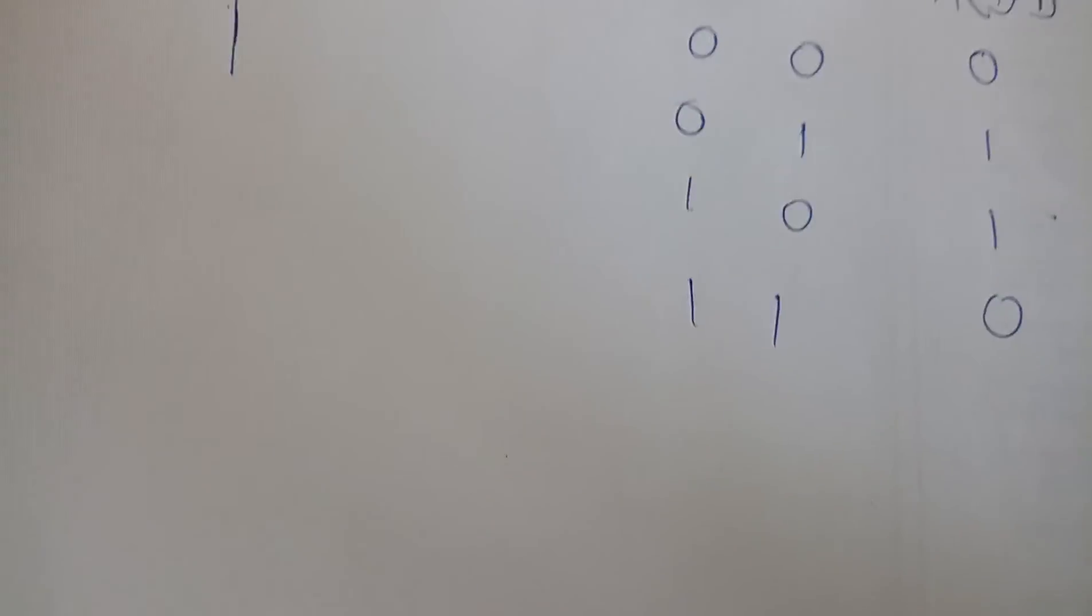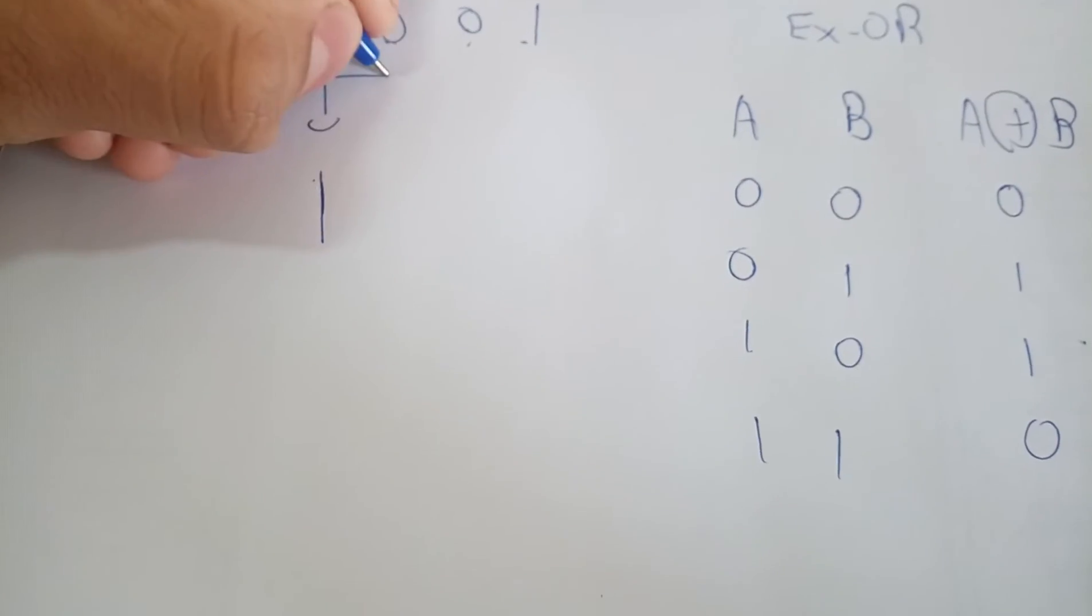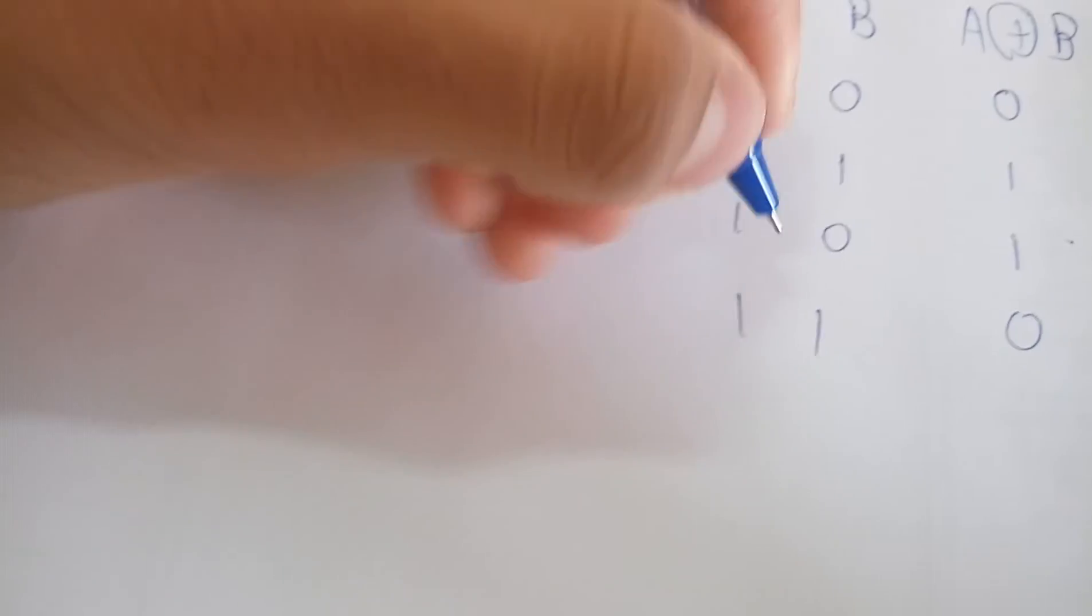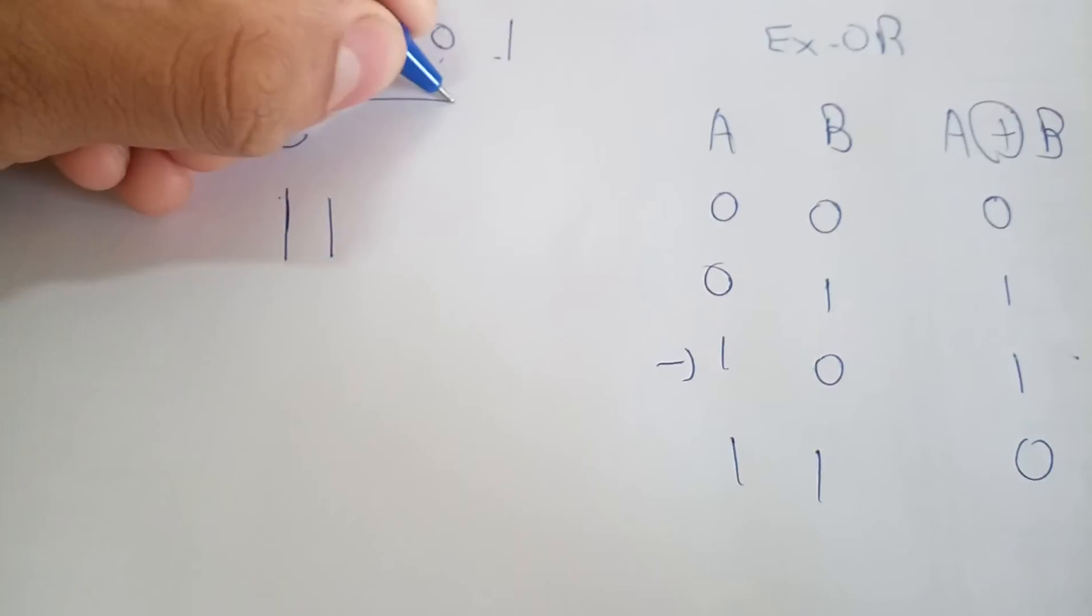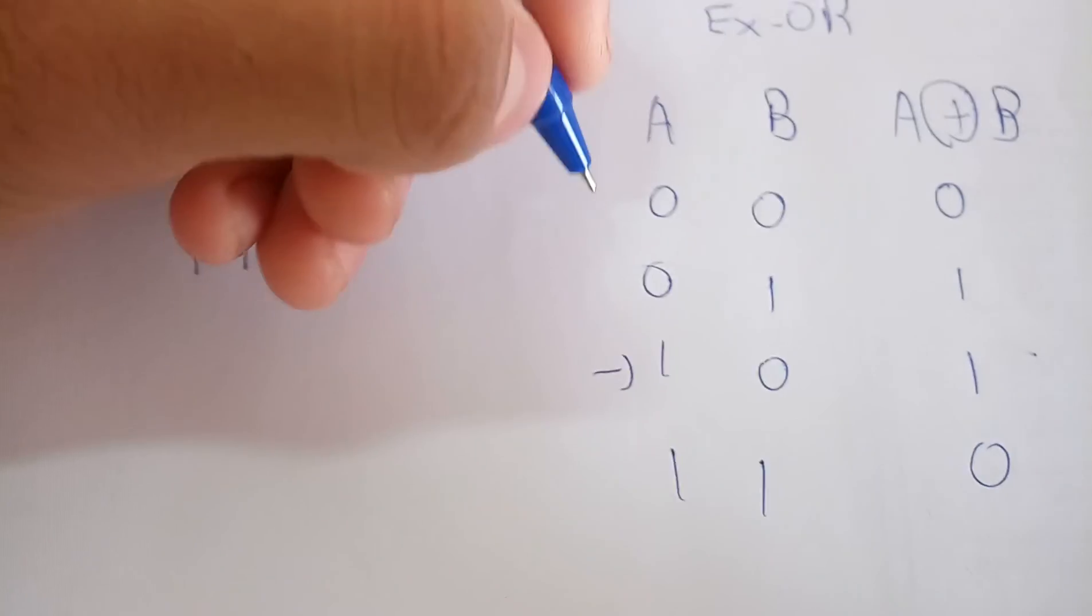So what will be the XOR of 1 and 0? The XOR of 1 and 0 will be 1. Then what will be the XOR of 0 and 0? 0 and 0 will be 0.